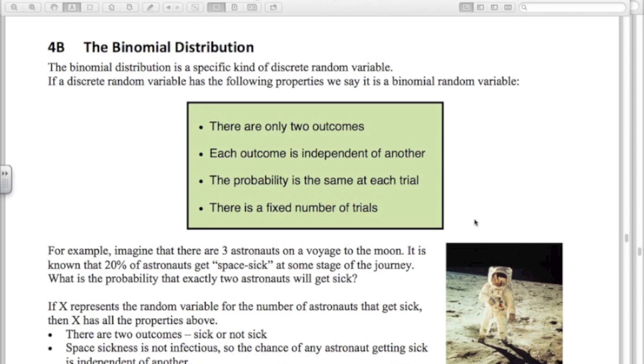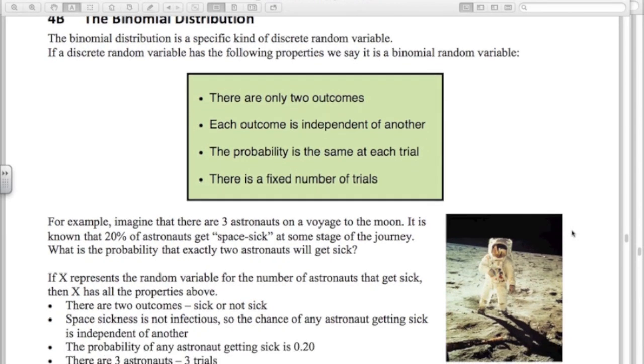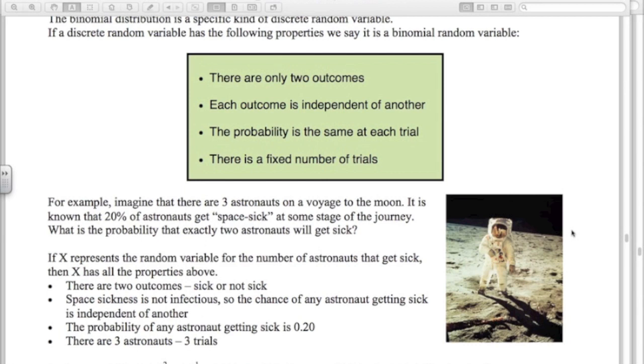So let's look at this example to derive the formula for the binomial distribution which you are given on your formula sheet. Imagine there are three astronauts on a voyage to the moon. We know that 20% of astronauts get space sick at some stage. And I want to know what's the probability that exactly two astronauts will get sick. That might be a really important problem because once you're missing two astronauts, you might not be able to fly the spacecraft properly.